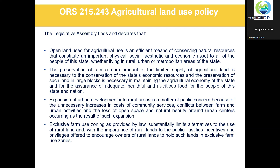Before we move on from this policy statement, I want to touch briefly on Planning Goal 2 and the exceptions process. The statewide land use planning program isn't absolute, and Planning Goal 2 contemplates that there may be unique or exceptional situations in which the policies of the statewide planning goals are appropriately waived. So when we are reviewing an exception to Statewide Planning Goal 3, it is because there's something so important or unique about that property or the project proposal that it merits waiving the principles articulated in the agricultural lands policy.